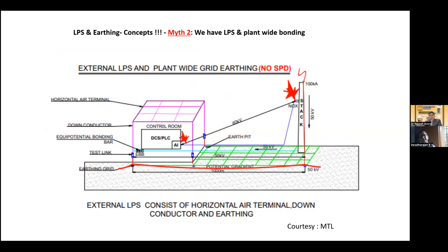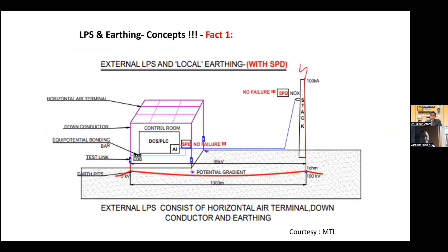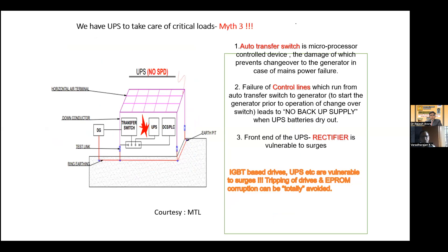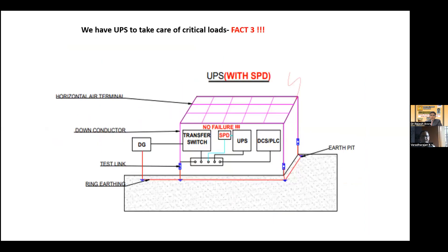External LPS with plant-wide grid earthing but still no SPD reduces the problem, but does not eliminate it — because your equipotential bonding has resistance and inductance. If you take UPS, the transfer switch is microprocessor-based. As I said, even to protect your UPS transfer switch, you need SPDs. Especially when it is IGBT-based drives and UPS, you must have SPDs. With SPDs for both power line and communication lines, you can avoid problems.